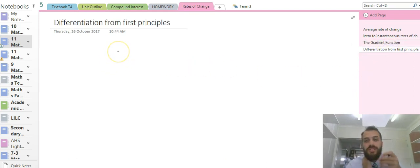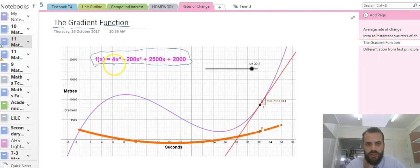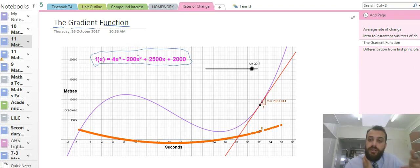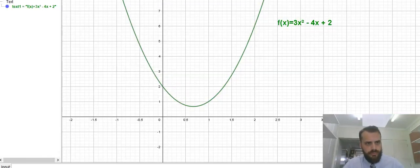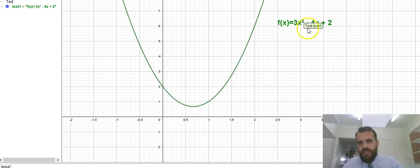Differentiation from first principles is the difficult way and you definitely need to know how to do it. So we're not going to do it with this function here because differentiation from first principles with a cubic is not impossible and you'll be able to do it eventually, but it's probably not a good one to start with. So we're going to do it on an easier one to begin with. Here's the function that I am going to differentiate from first principles. It's f(x) = 3x² - 4x + 2, so a quadratic, and I'm going to find out what its gradient function is by using differentiation from first principles.